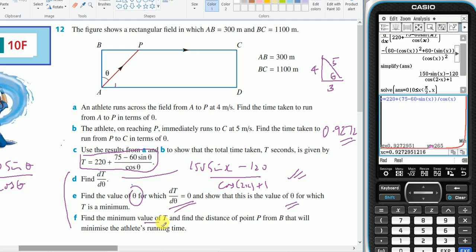Find the minimum value of t. Well the minimum value of t will be 265. And find the distance that point P is from B.